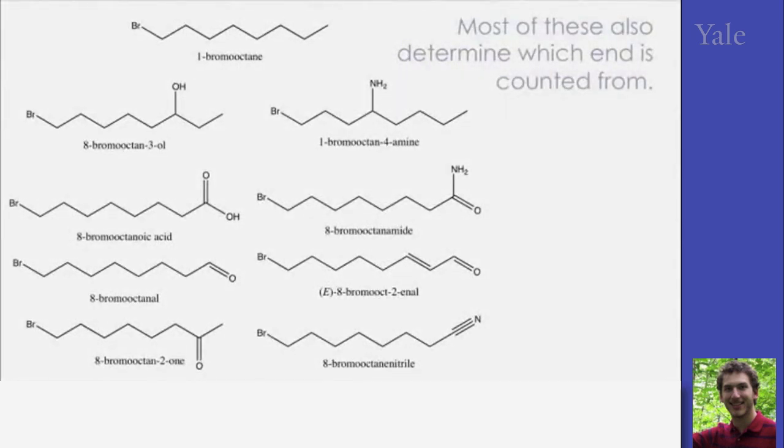This means that they also determine the numbering scheme that's used in the chain. Typically, you would choose to count from whichever end minimizes the numbers that you're using for counting. For instance, 1-bromo-octane, if you put the bromo on the very end, rather than 8-bromo-octane. But, when the numbering scheme is determined by the functional group, the substituent that's used in the suffix, then the bromo group at the very end is going to be 8, whether or not it's the lowest number available for counting.